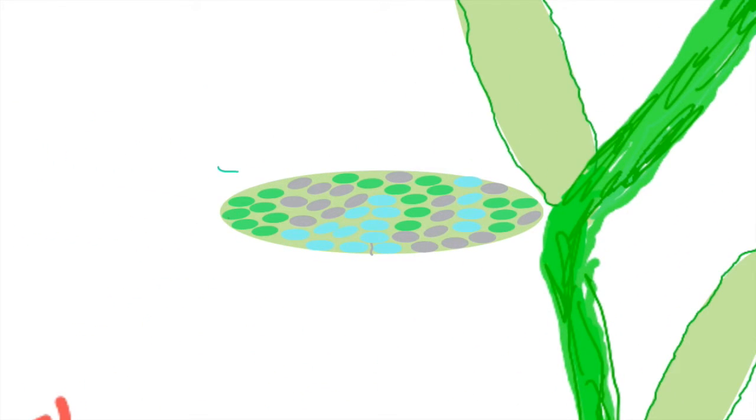As you can see, I've arranged this organ, this leaf, into various tissue groups designated by different colors.